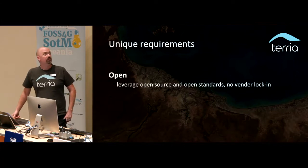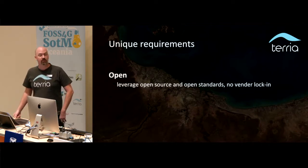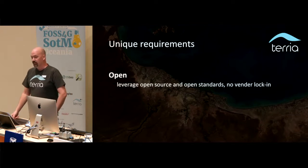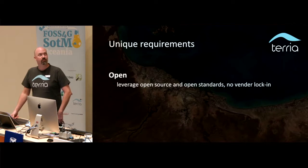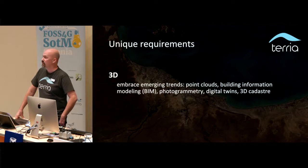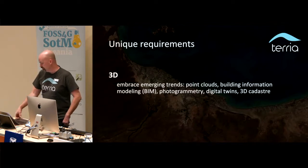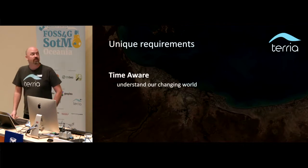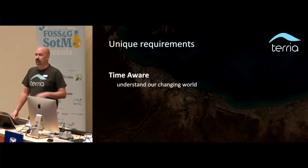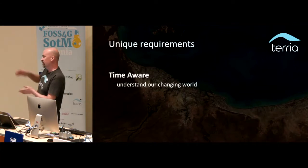It has to be open. We've made it open source. We follow as many open standards as we can, only developing new things when there's absolutely no alternative. This is to avoid vendor lock-in so that citizens can use the data and don't have to pay for ESRI or something like that. It has to be forward thinking — things are becoming more 3D, so we have to be able to display 3D data. And we have to be time aware — able to show things from 100 years ago and compare to today or forecast 100 years into the future.